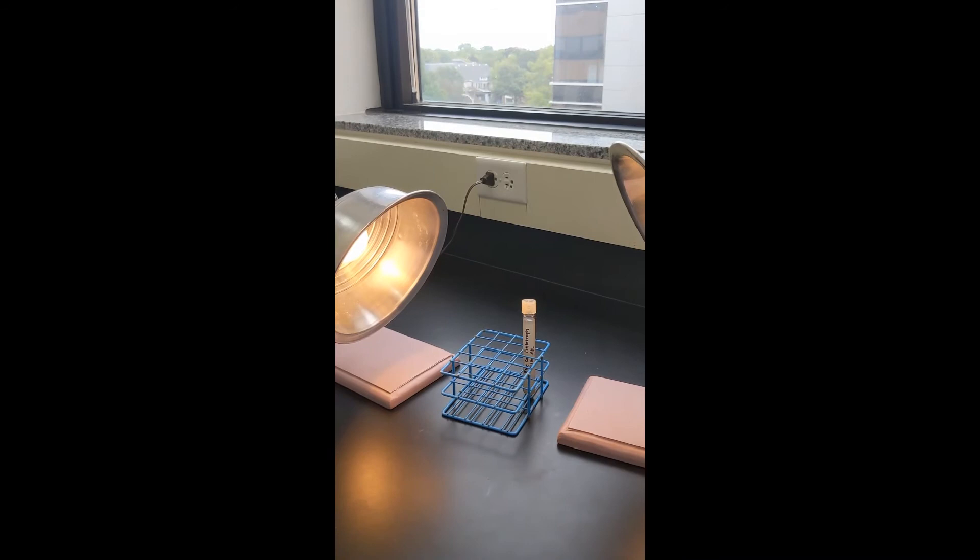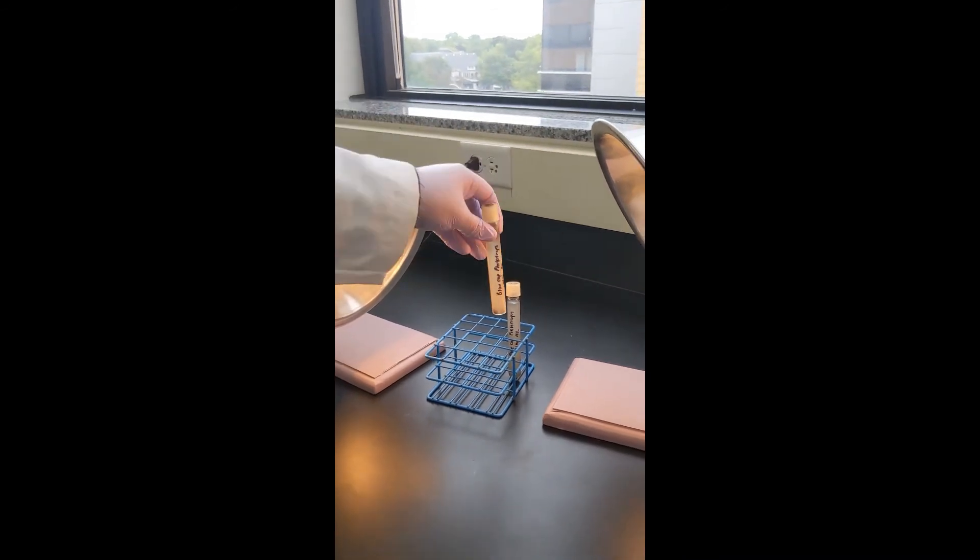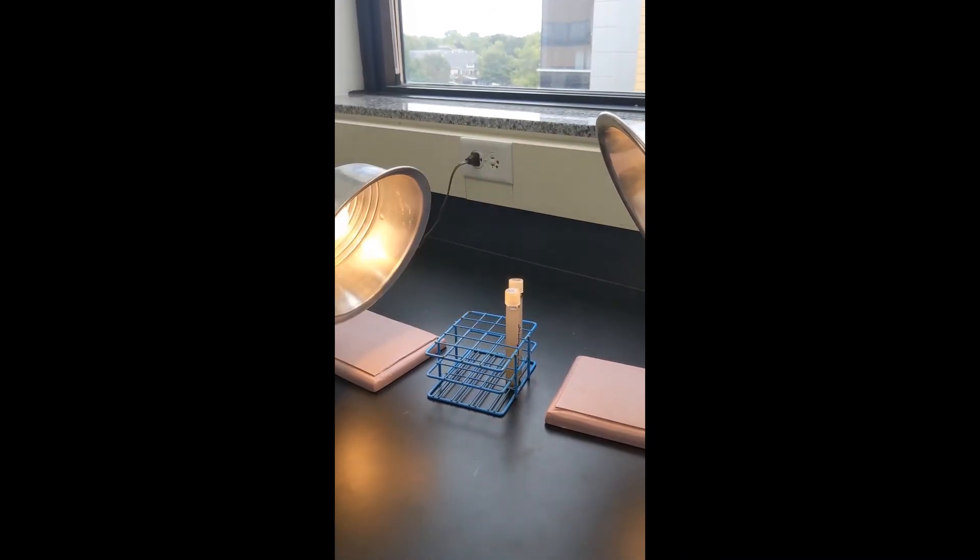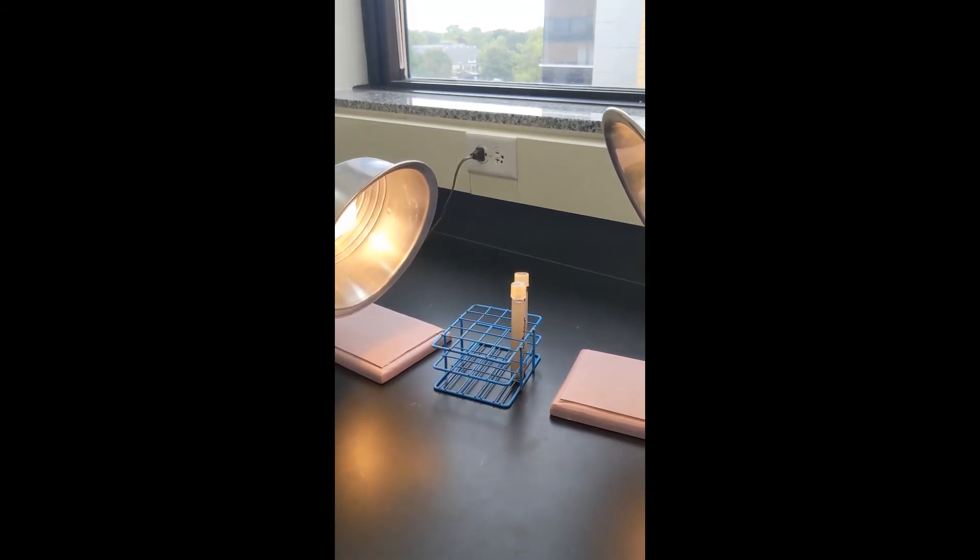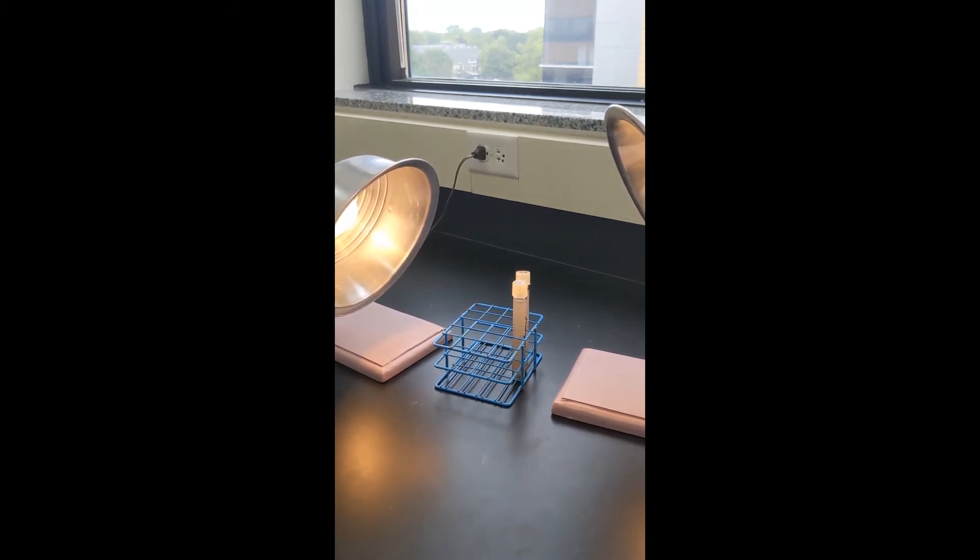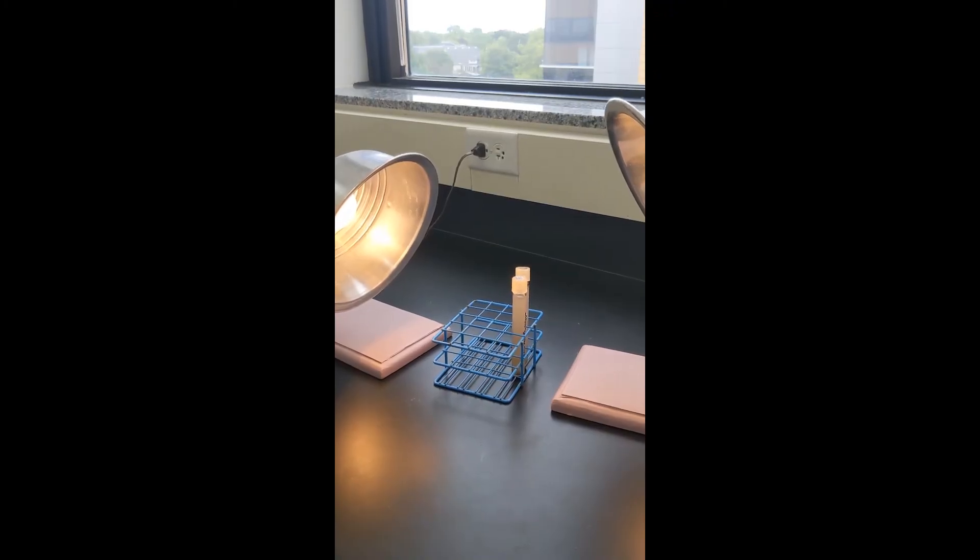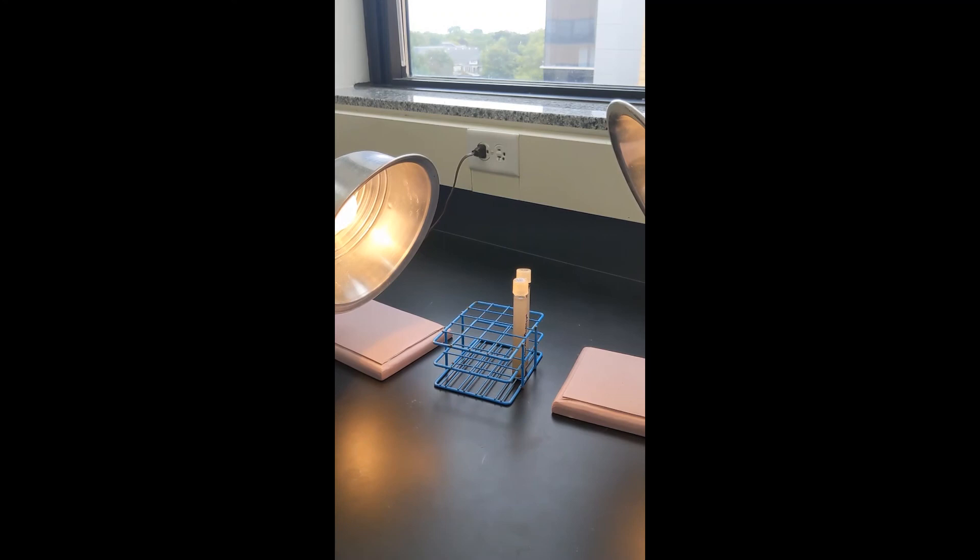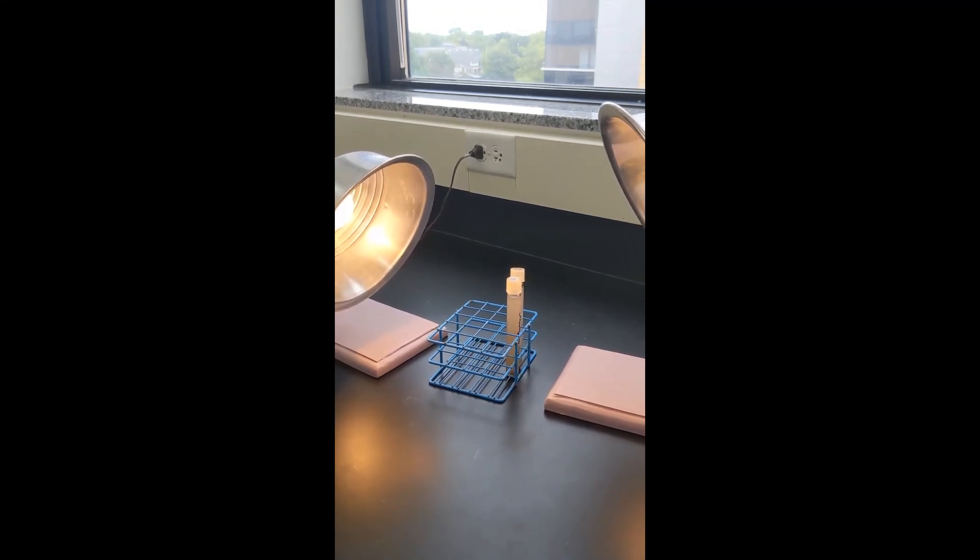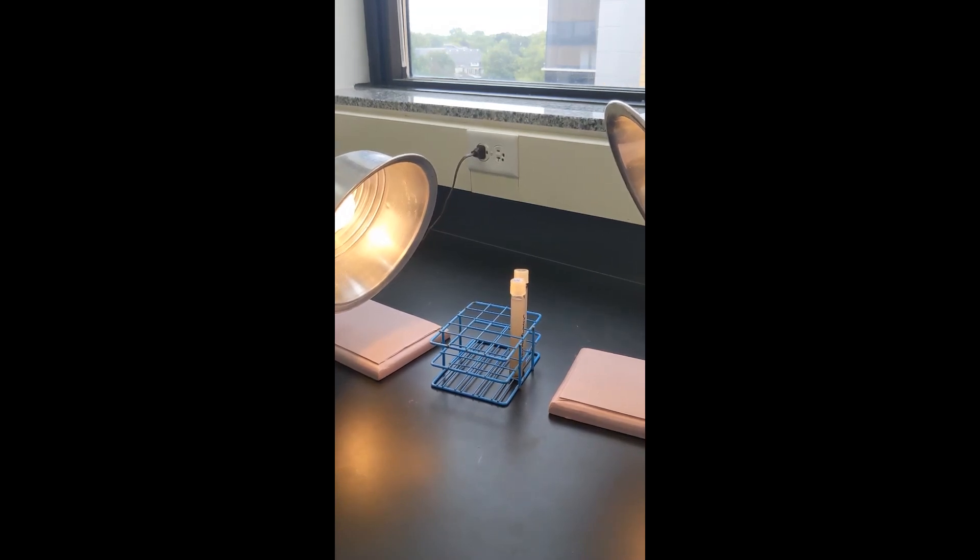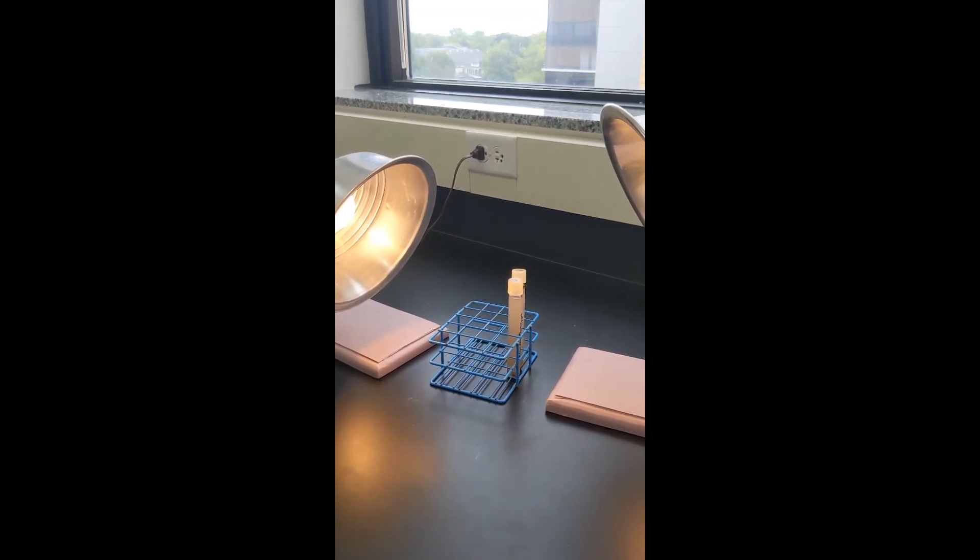All right, here is our light setup. All we have to do is stick the vial in there and let it grow. Normally we would check in every lab period and look for some pigment changes. Seeing as we're going online, we can't really do that, so we as the lab TAs will check in on it and show you the results.